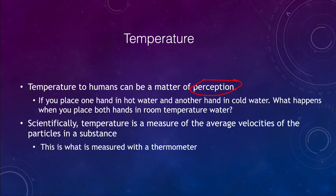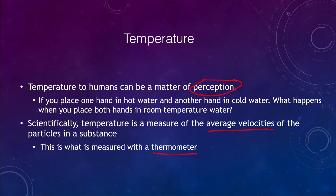In science, temperature is a measure of the average velocities of the particles in a substance — this is what a thermometer is measuring. Because we are looking at the velocities of the particles, there is an absolute minimum temperature you can reach. You can continue to slow the particles down, their average velocities getting closer and closer to zero. Reaching zero gives you what we call absolute zero — the coldest something can possibly be — because once particles stop moving, any movement would increase the temperature, so there is no way to go below it.